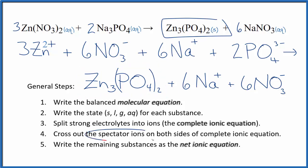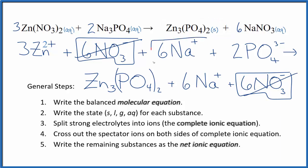Now we can cross out the spectator ions. They're on both sides. In the reactants we have six of these nitrate ions, we also have six of them in the products. These are spectator ions, we can cross those out. We have six sodium ions in the reactants and again in the products. Spectator ions, we cross them out.